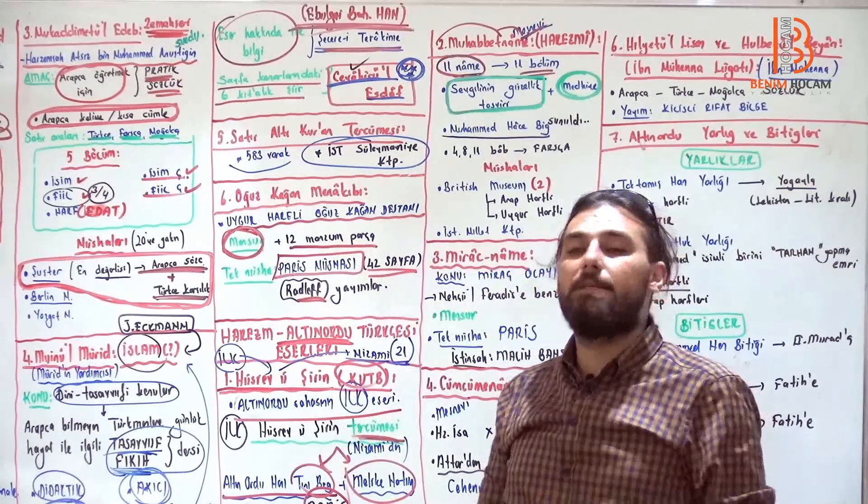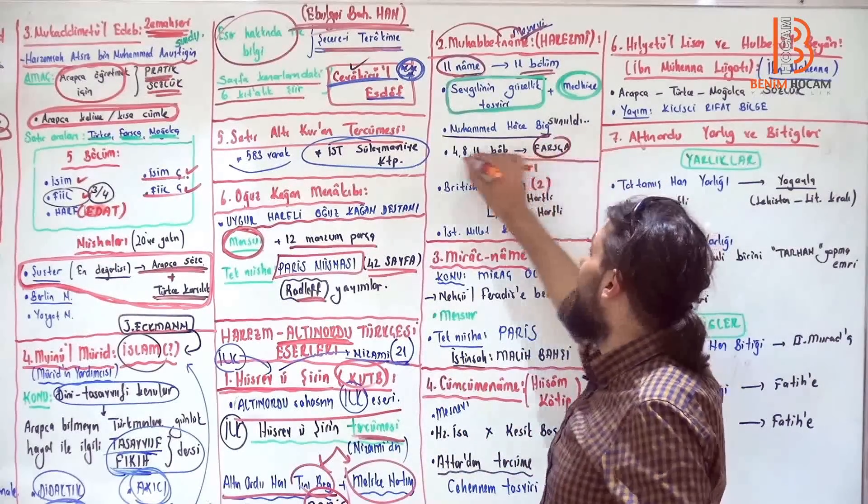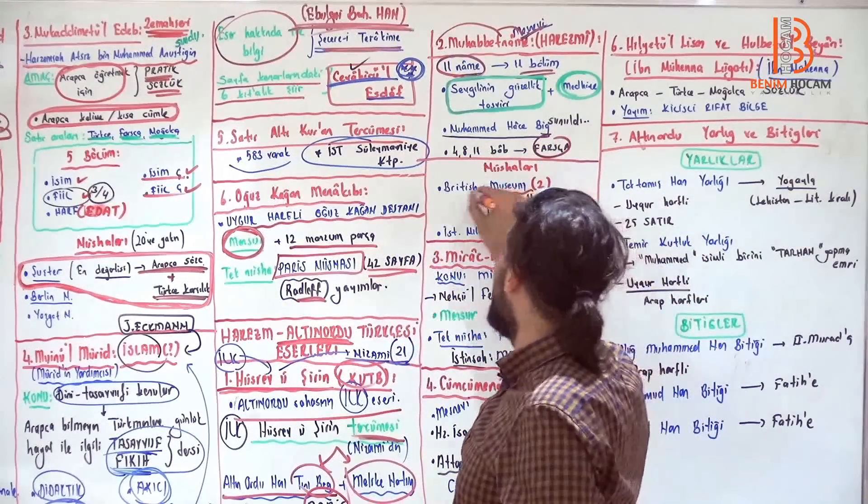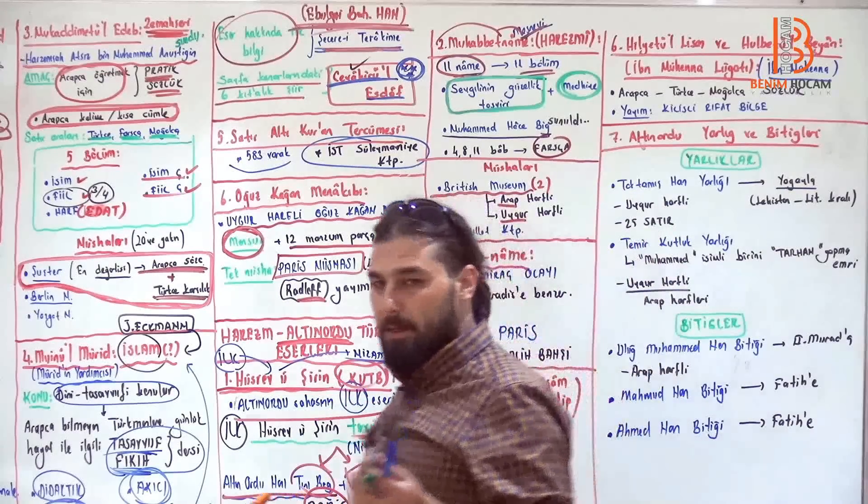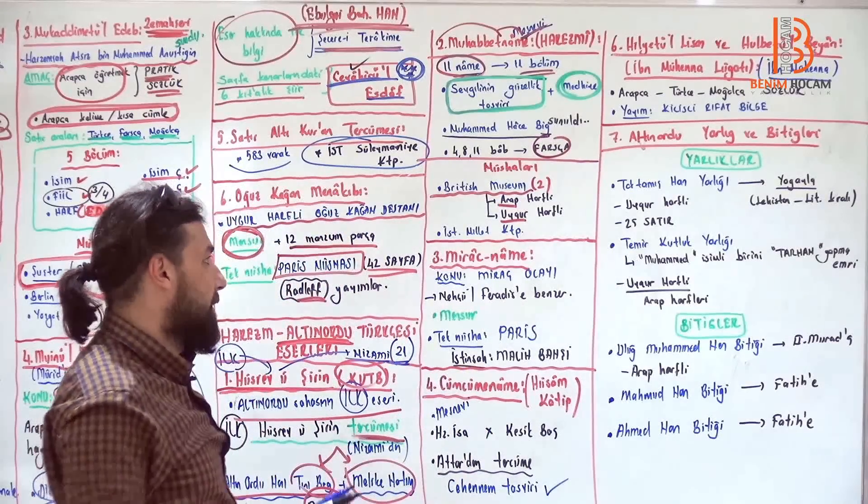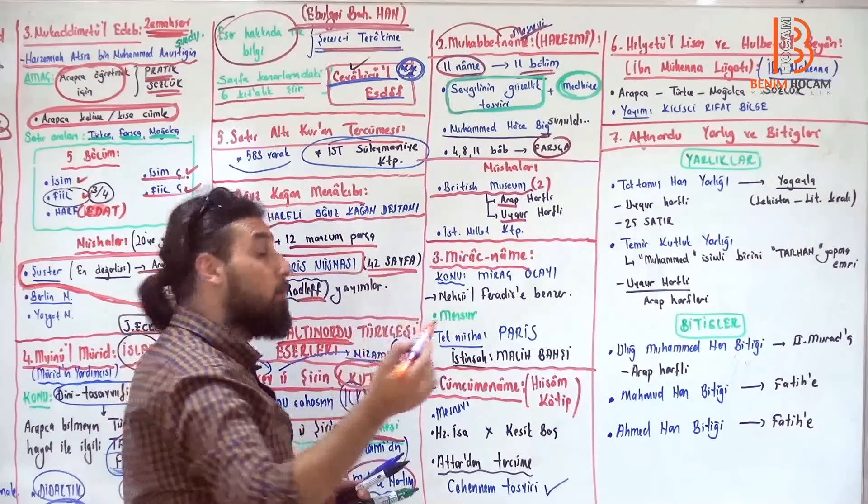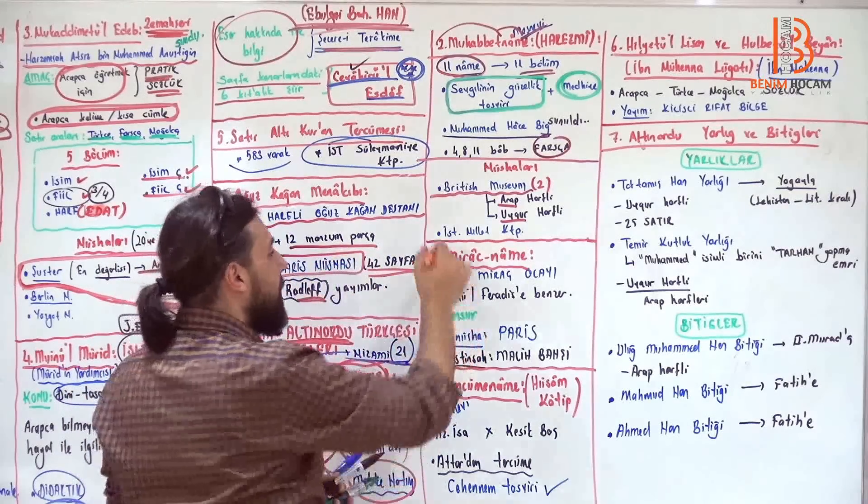Mehmet Hacebi'nin Sığınak'taki sarayında yazılmıştır ve ona sunulmuştur. 11 babın 4, 8 ve 11. babları Farsçadır. Nüshalarına gelince, British Museum'daki nüshası var. Birisi Arap harfli, birisi Uygur harfli. Hatırlayın, niye yazdım ben bunu? Hem Arap harf, hem Uygur harfleri kullandığı için. Ve bu dönemin özelliğidir. Yani genellikle Arap harfleri kullanılır ama Uygur harfli de vardır bakın.